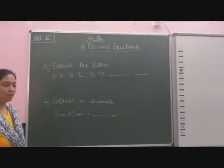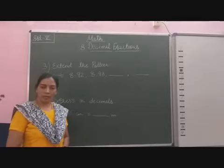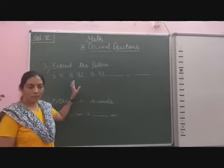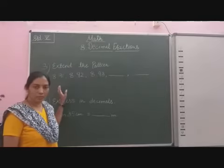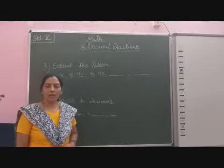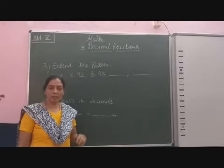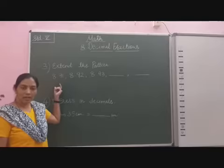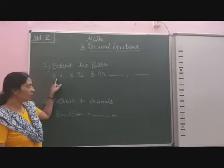That's 8.91, 8.92, 8.93. First of all we study these 3 decimal numbers. You can easily observe that the whole part is 8 - 8 is on the ones place, after that comes the decimal point.